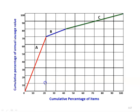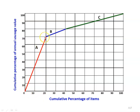In the ABC graph, cumulative percentage of items is plotted against cumulative percentage of annual usage value. Item A constitutes about 20% of items but 70% of cost. Item B constitutes about 20% of items and 10% of cost. Item C constitutes about 60% of items and only 20% of cost.